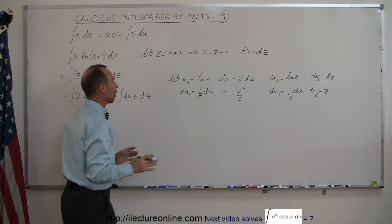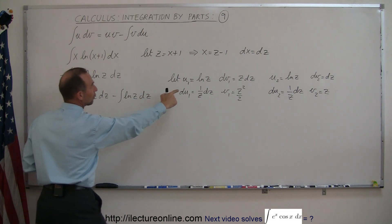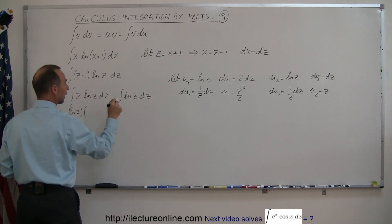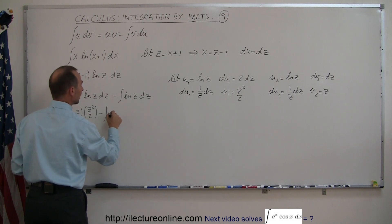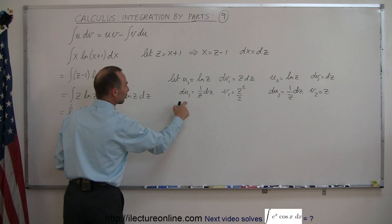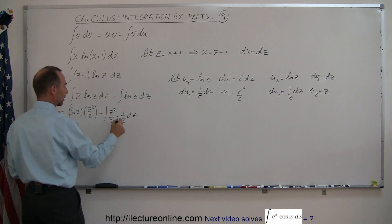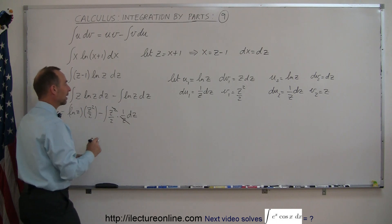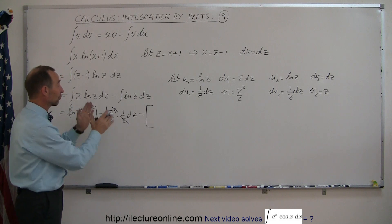Substituting into the integration by parts formula, the first integral becomes u1 times v1 minus the integral of v1 du1: that's the natural log of z times z squared over 2, minus the integral of z squared over 2 times 1 over z dz. We can cancel and pull the 1 half outside the integral sign.